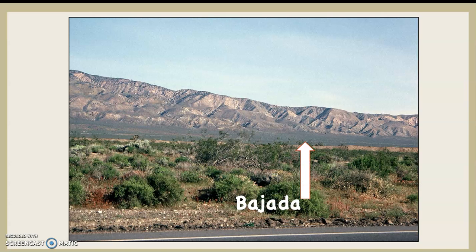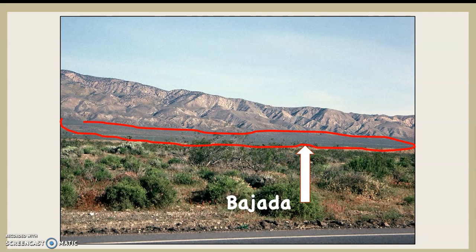That white arrow is pointing at a bajada, which is just a series of overlapped alluvial fans. All of that material circled formed at the base of those canyons — you can see every one of those canyons cutting down through the mountains, and that material deposited along the base of those mountains is called a bajada.